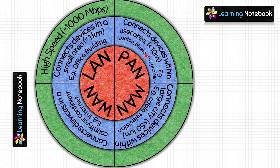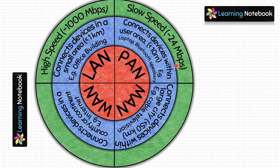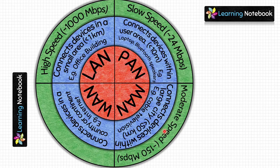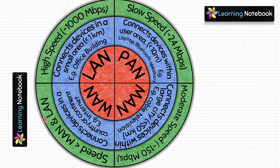PAN is Personal Area Network and its range is less than 10 meters, so its speed is very low — up to 24 Mbps. MAN — Metropolitan Area Network — has moderate speed, up to 150 Mbps. Lastly, internet speed varies from region to region, but usually the speed of WAN is less than MAN and LAN. Now we have completed all three circles.